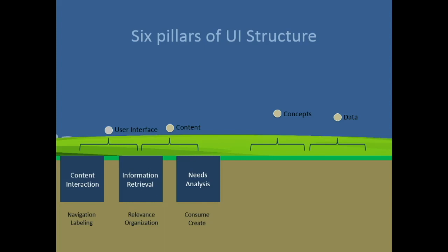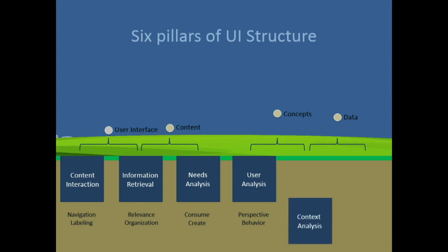This is where we're crossing into another domain of information science that still needs development in our field. This leads us to modeling concepts — concepts derived from our research and discussions with users — and discovering their perspectives and behaviors. A very typical tool has been personas, but from an information architect's perspective, personas are typically a dossier, and the information architect's role is to abstract that dossier.